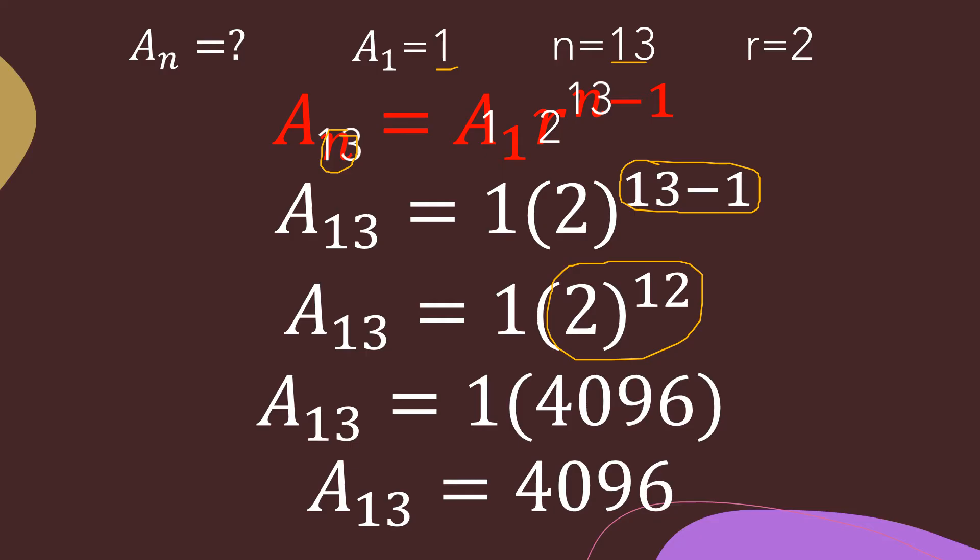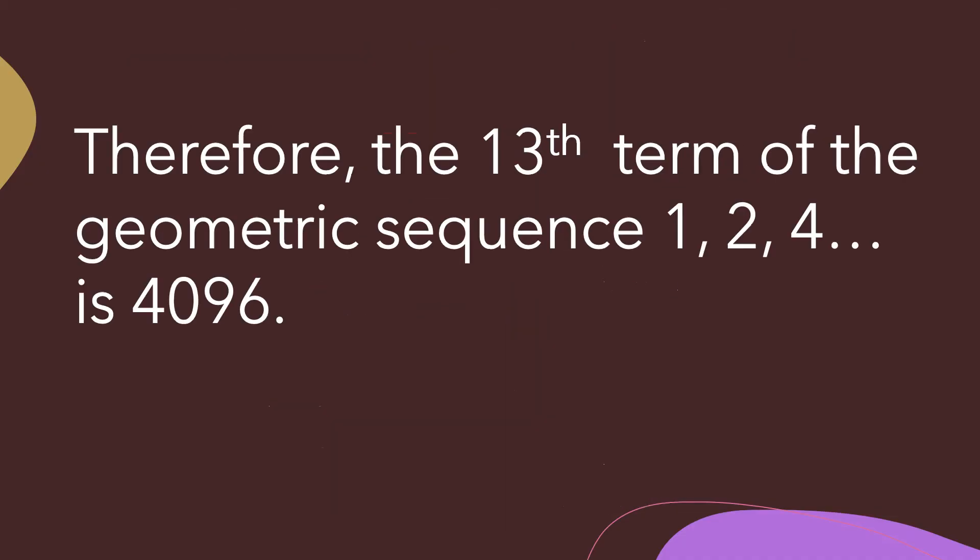Therefore, the 13th term of the geometric sequence 1, 2, 4 is 4096.